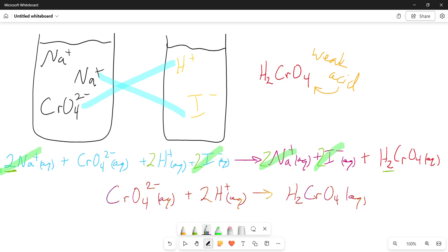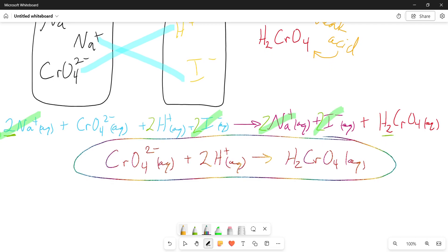So this is our net ionic equation for this problem, and what this shows is the formation of a weak acid from its conjugate base. Right, because we already stated this is a weak acid, and this, the chromate, is its conjugate base.